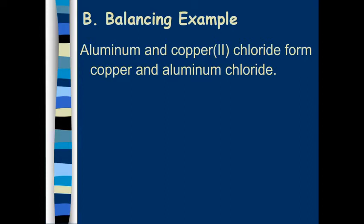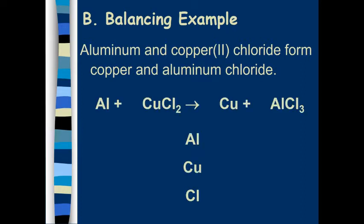Okay, so for our first example here, the written out equation says aluminum and copper 2 chloride form copper and aluminum chloride. You're going to have to write out Al plus CuCl2 reaction arrow Cu plus AlCl3. And you should already know how to do that because of our naming unit. Now below that we have Al, Cu, and Cl. We are going to count how many of each of these are on each side of the reaction arrow. So on the left side and on the right side of the arrow. So we are going to count how many aluminums do we have on the left? One. How many aluminums do we have on the right? One. Remember the three only applies to the chlorine.